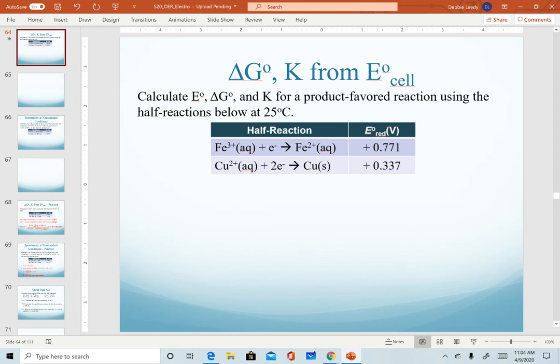We will use these two half reactions for our sample calculations here. So we are asked to calculate standard cell potential, standard free energy, and our equilibrium constant for a product favored reaction using these half reactions below. Remember the key thing for a product favored reaction we want to make sure that our total cell potential is a positive value.